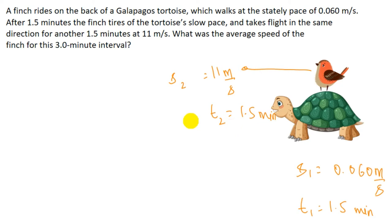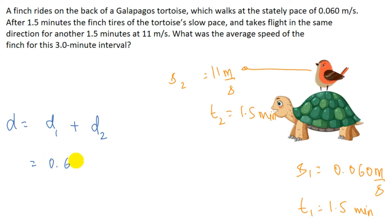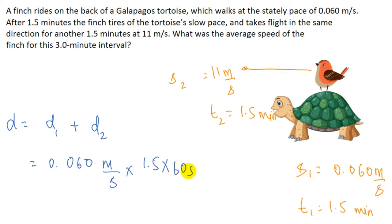To find average speed, we first calculate total distance d = d1 + d2. d1 is the distance covered on the back of the tortoise: speed 0.060 meters per second multiplied by 1.5 minutes, converted to seconds by multiplying by 60. d2 is the distance the finch flew alone at 11 meters per second.